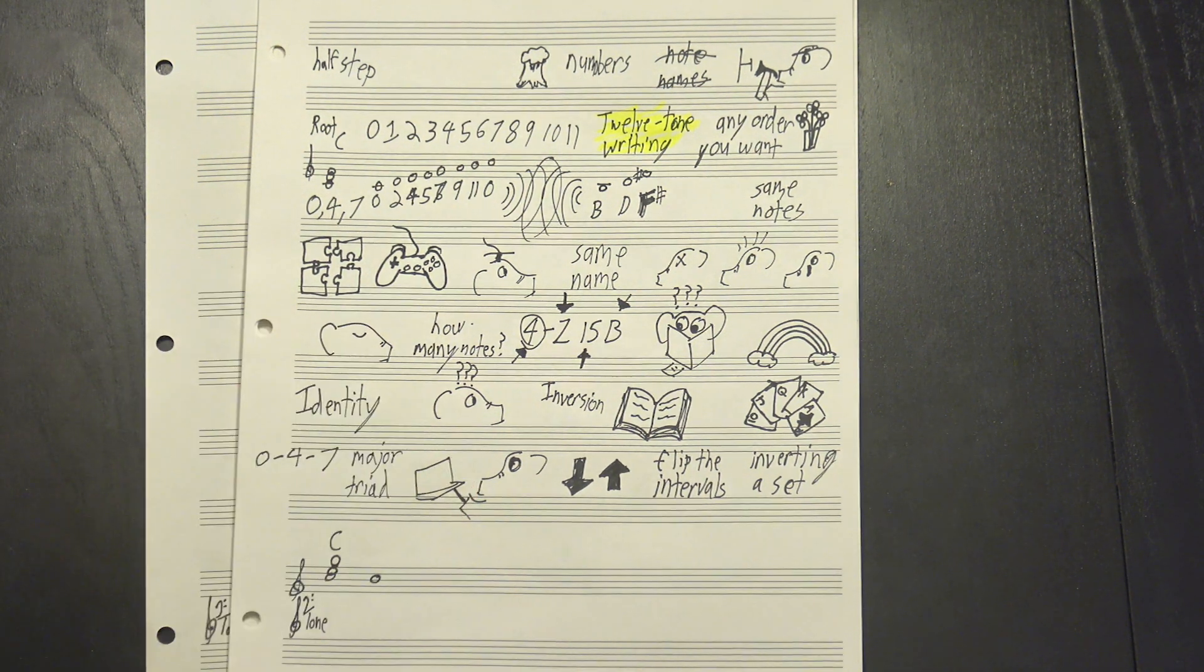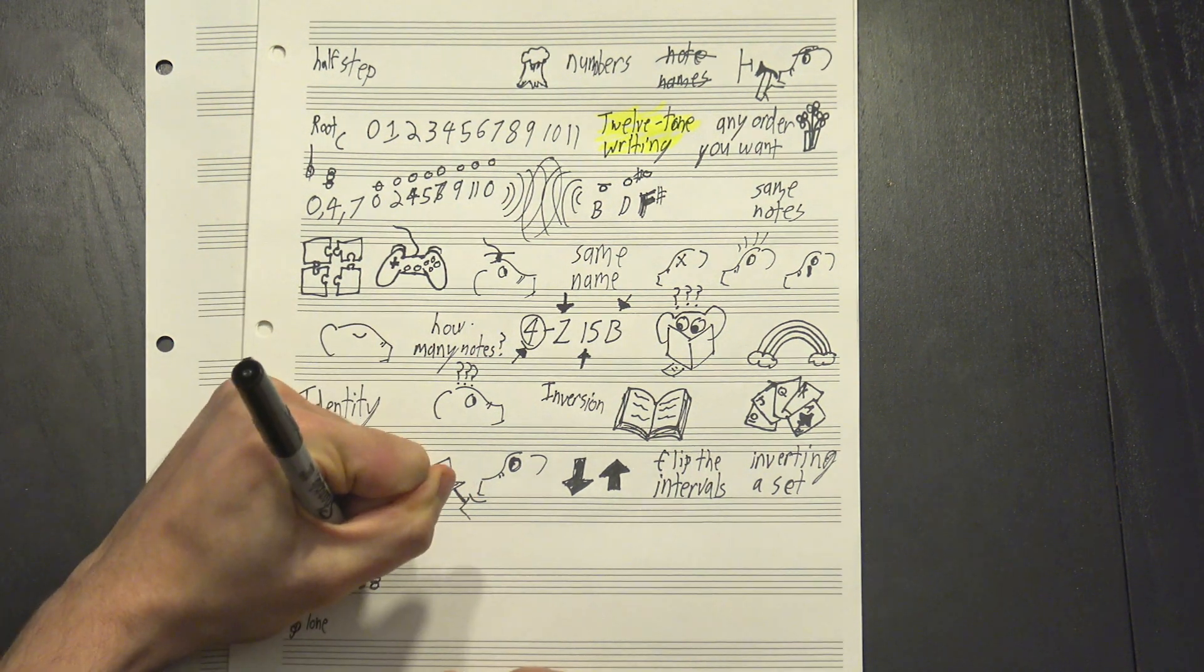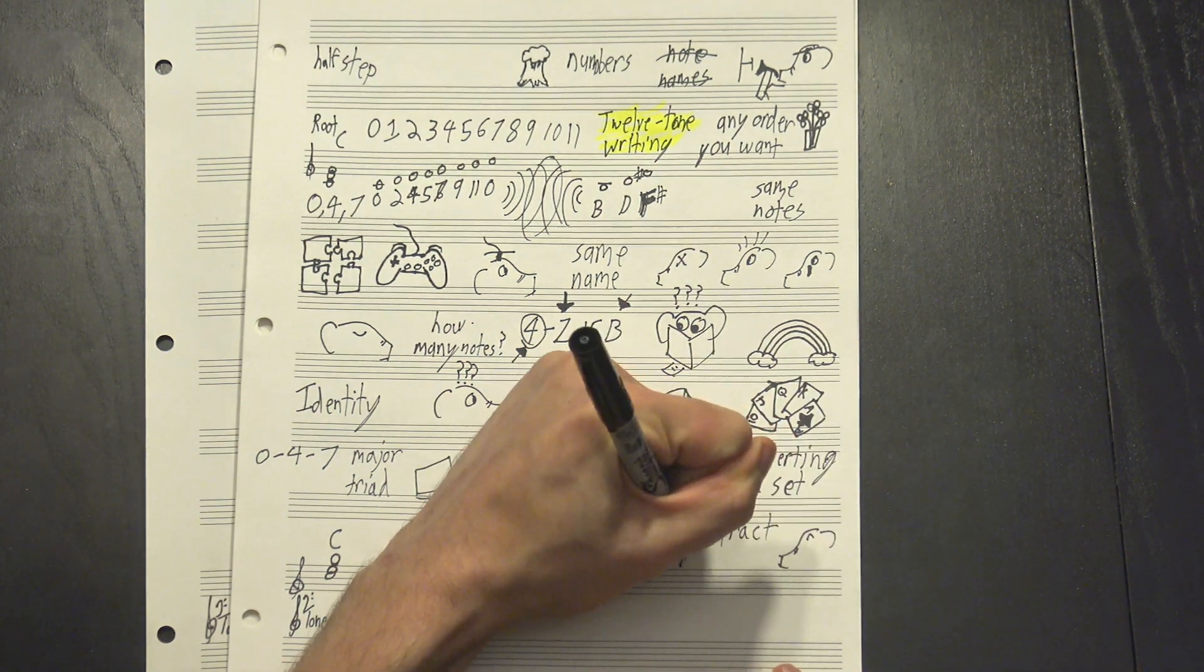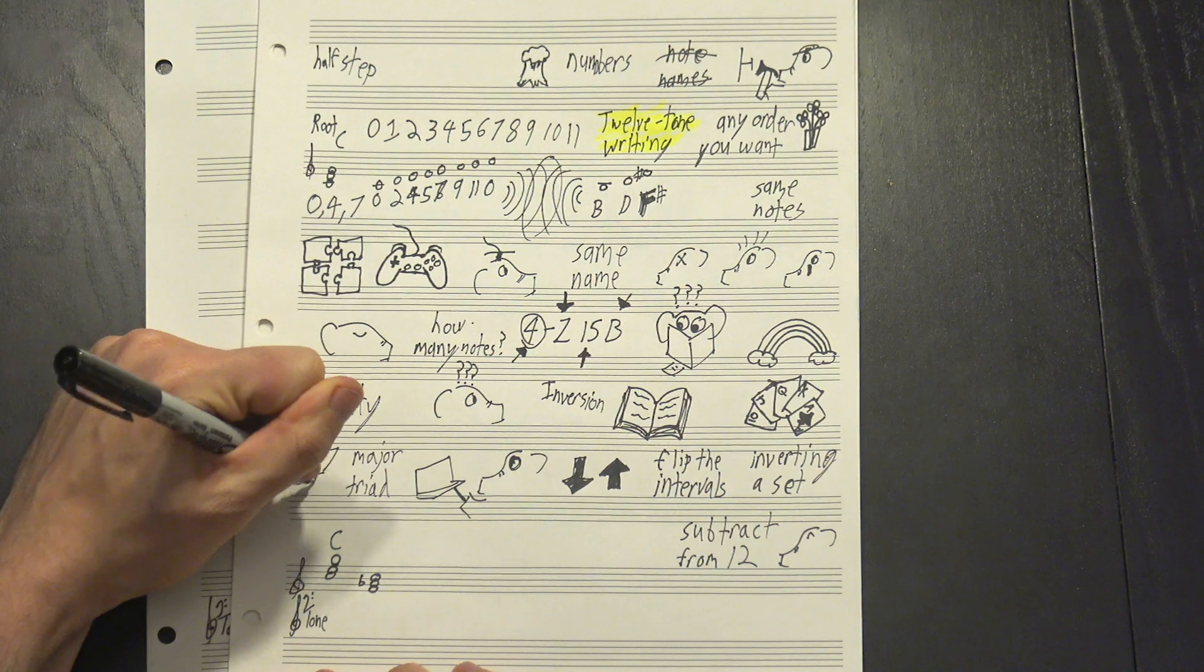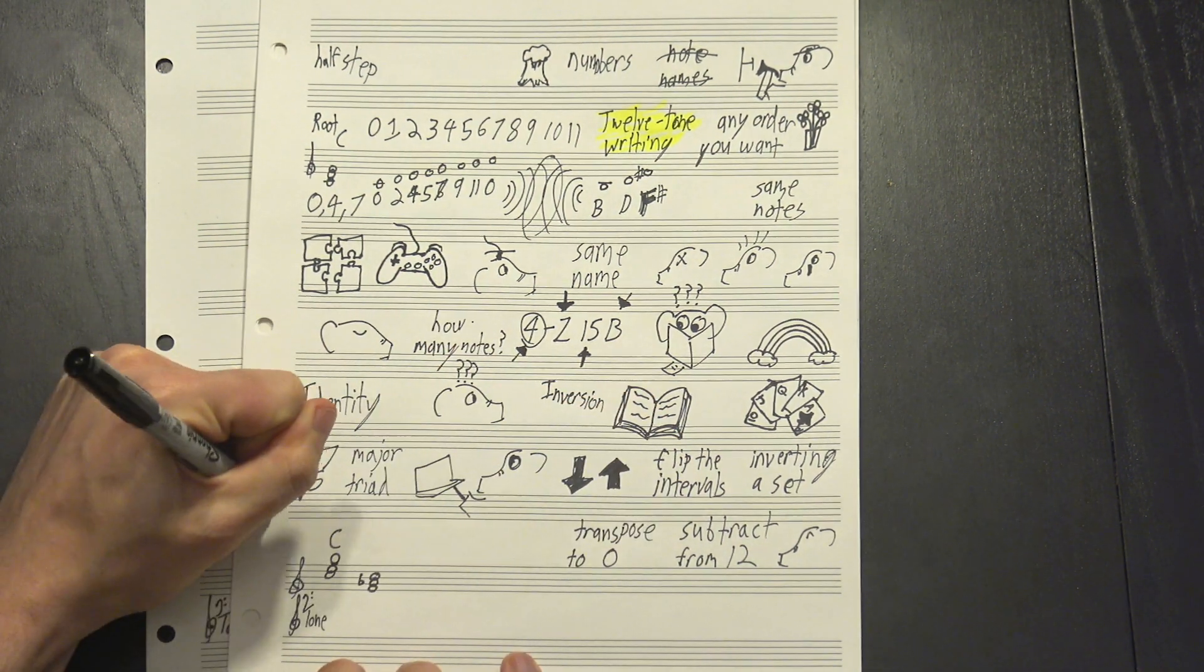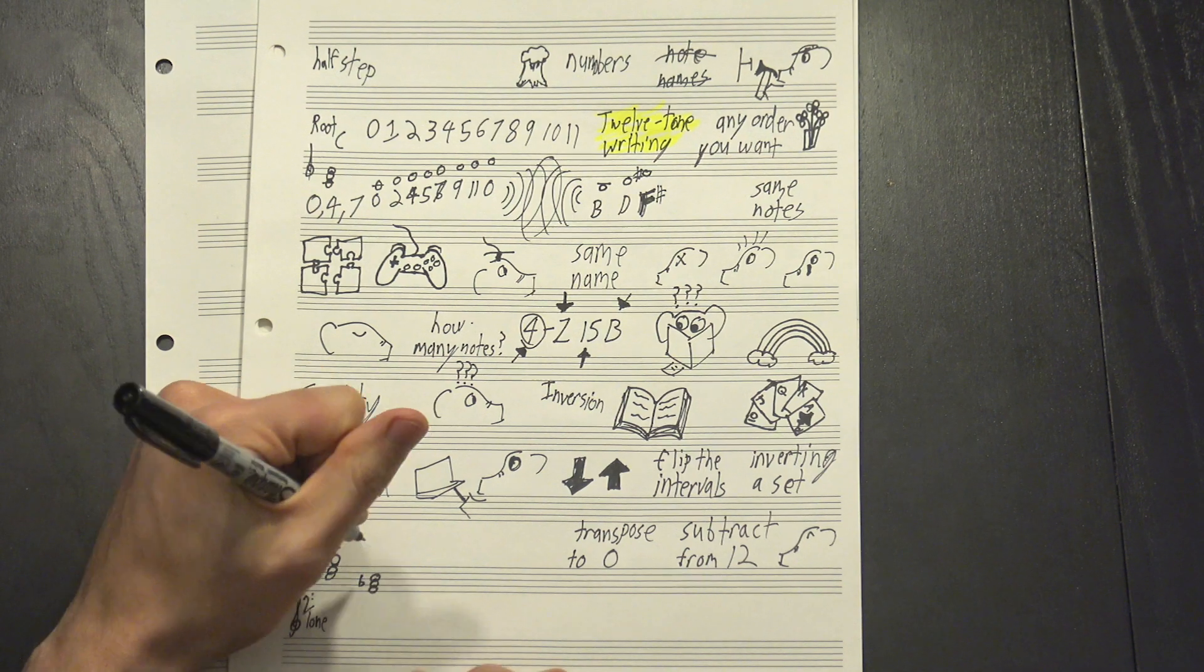To invert that, we again have a root, but this time we have a note four half-steps below it, and another seven below. And there's a handy trick for this. You just subtract each number from 12 to get its inverted value, giving us 12, 8, 5. If we rearrange that a bit and transpose it to start on zero again, we get 0, 3, 7, which happens to be a minor triad.